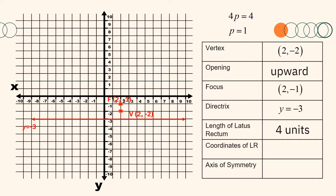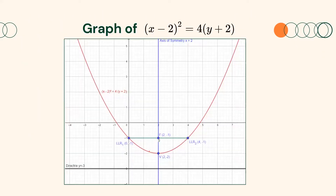For the endpoints of the latus rectum, since its length is 4 units, each endpoint is 2 units away from the focus. Since the parabola opens upward, the latus rectum is a horizontal line that is 4 units in length, with endpoints 2 units to the right and to the left of the focus. Therefore, the coordinates of the endpoints are (0, negative 1) and (4, negative 1). We can now draw our parabola. The axis of symmetry is the line x equals 2, which divides the parabola into two equal parts.